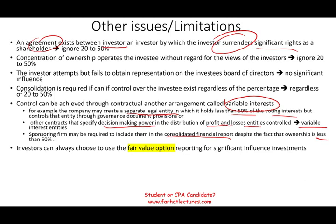Investors can always elect something called the fair value option. If you own between 20% to 50% — where the guideline says use equity — you can choose instead to use the fair value option. The fair value option means you write up and down your investment based on the fair value of the company, not based on income and dividends as required under the equity method. So the fair value option is simply another option: you elect fair value, forget about equity, and use that instead.